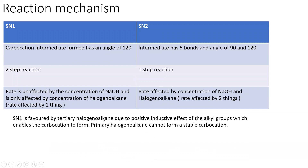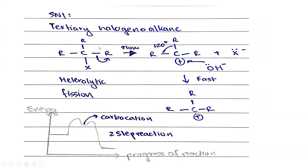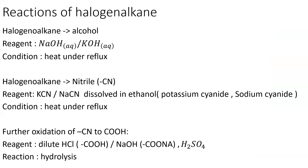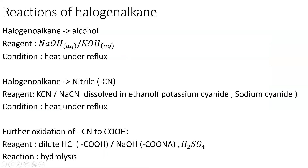Secondary halogenoalkanes can take either SN1 or SN2, and this isn't typically tested in the exam. For the reactions of halogenoalkanes: to convert a halogenoalkane to an alcohol, the nucleophile is OH⁻, produced by aqueous NaOH or aqueous KOH, and you heat under reflux.